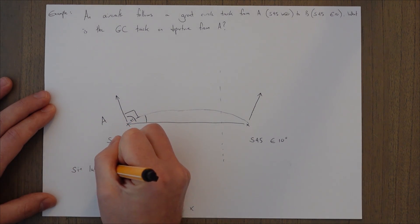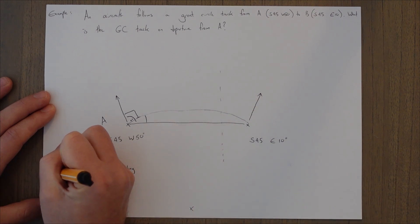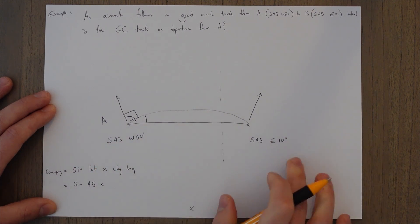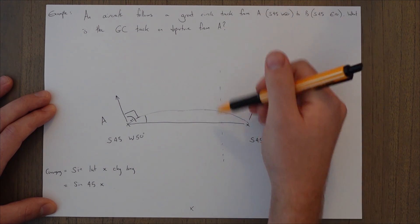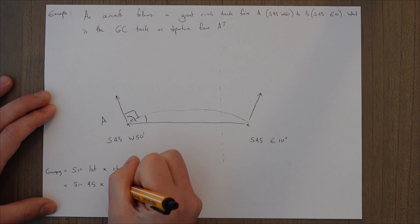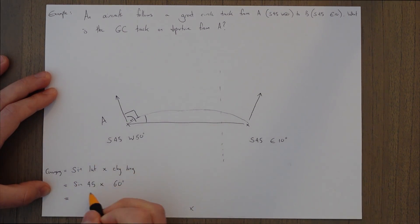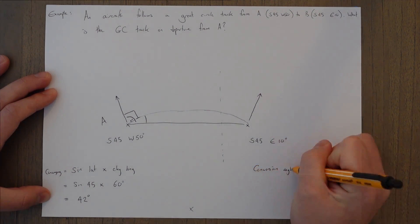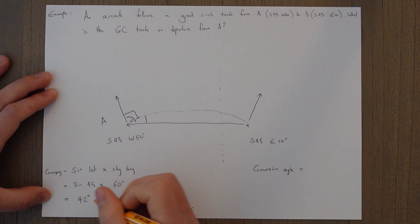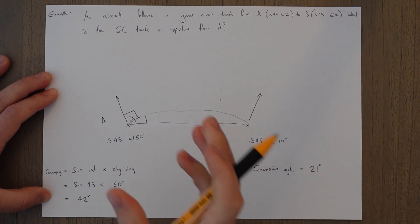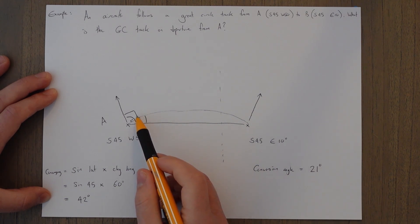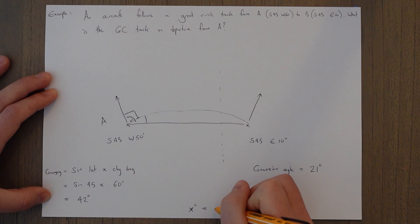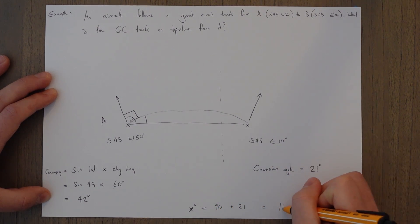Using our equation: sine latitude times change in longitude equals convergency. Sine 45 multiplied by the change in longitude from West 50 to East 10 — we're passing through the Greenwich Meridian, so we add them together, giving a 60-degree change. Sine 45 is about 70%, so convergency is approximately 42 degrees. Our conversion angle — the difference between the rhumb line and the great circle — is half of that: 21 degrees. Looking at the picture, we can clearly see the great circle is going to be bigger than the rhumb line. So our great circle track is 90 plus 21 equals 111 degrees.